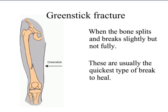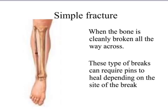The greenstick fracture is when the bone is bent but not broken. Children with rickets are prone to this — think about the vitamin needed to prevent rickets. The bone is bent but has not gone all the way through. The simple fracture is when the bone is broken but the skin is still intact — it's cleanly broken all the way across. These breaks can require pins to heal, but they are usually the quickest to heal.